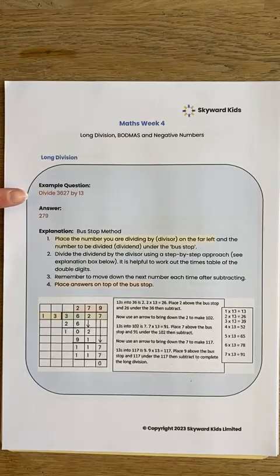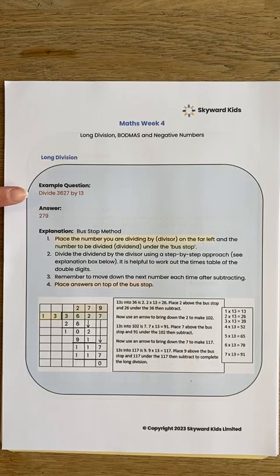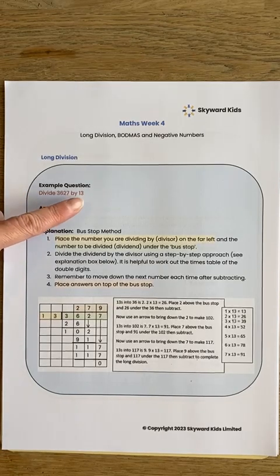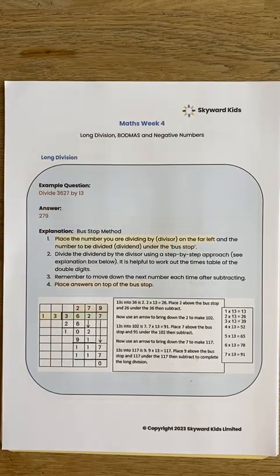The question says divide 3627 by 13. And because this is a longer number — we're dividing by 13, which is a two-digit number — we need to use long division rather than short division.